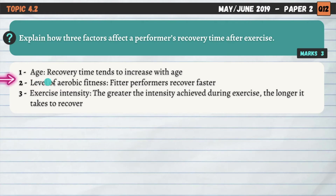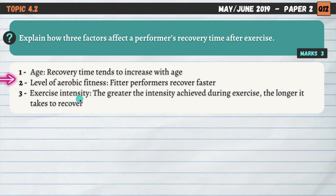The three I've gone for are: first, age — recovery time tends to increase with age, so as we get older we tend to take longer to recover. Second, level of aerobic fitness — fitter performers with better cardiovascular endurance tend to recover faster, partly because they're better at delivering oxygen to the body's tissues and removing lactic acid after exercise. Third, exercise intensity — the harder we work, the greater the intensity, and the longer it will take us to recover.